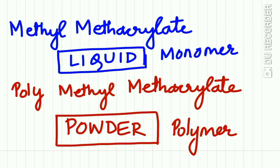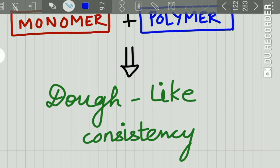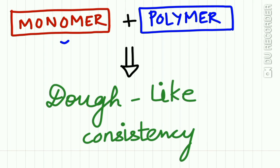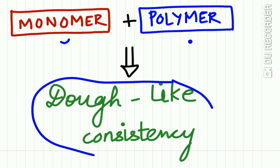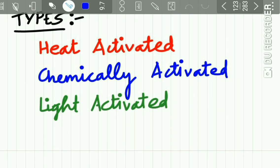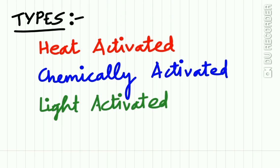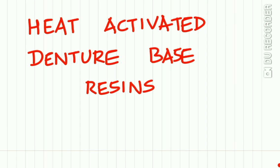Methyl methacrylate is the liquid or monomer, and polymethyl methacrylate is the powder or polymer. The monomer is mixed with the polymer to form a mass with a dough-like consistency. There are three types of acrylic resins: those activated by heat, those chemically activated, and those light activated.